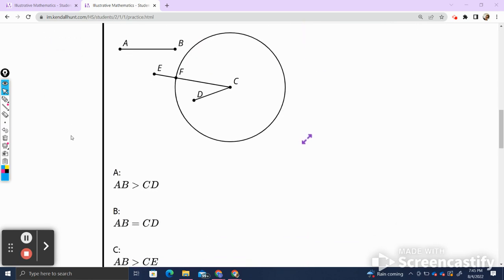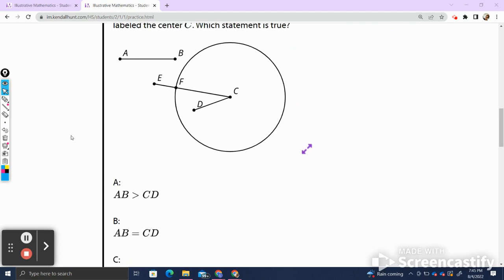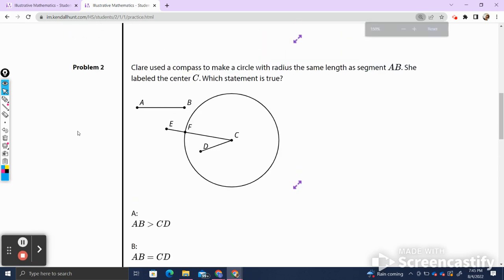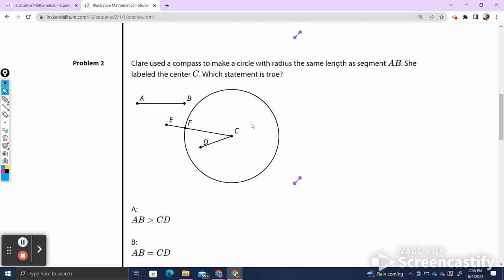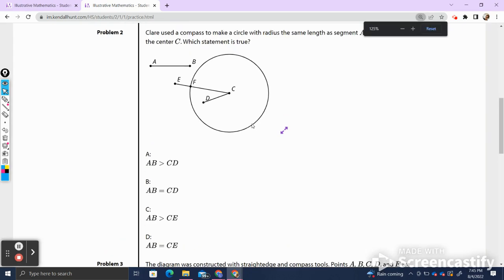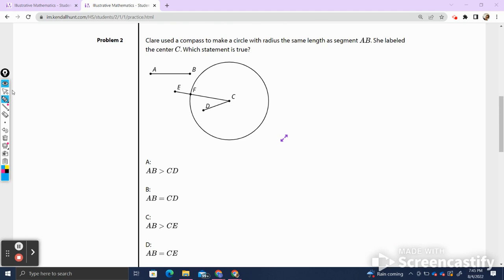Problem number two. We have to zoom out a little bit for this one so we can see all the options. Claire used a compass to make a circle with a radius the same length as segment AB. She labeled the center C. Which statement is true? So let's zoom out a tiny bit more. There we go. So Claire used a compass and she made a radius. So here's my radius FC. I'm going to mark it as the same length as AB, which is right here. Which statement is true?